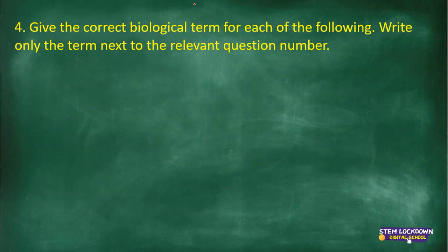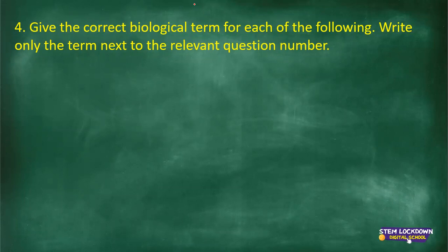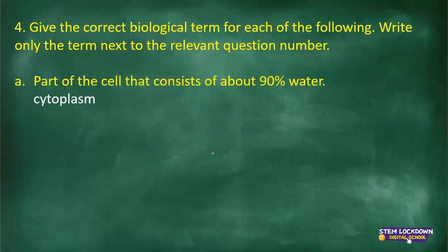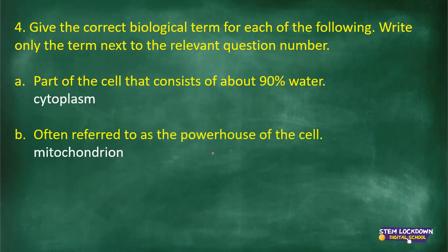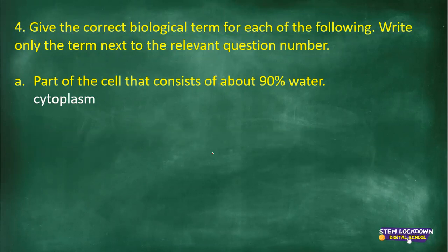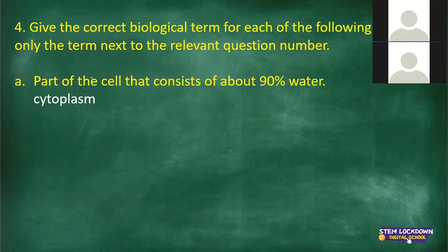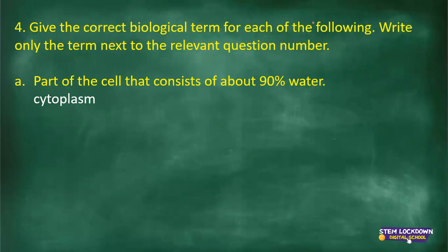Now we're giving the correct biological term for each of the following — write only the term next to the relevant question number. The part of the cell that consists of about 90 percent water is called the cytoplasm. Cytoplasm is that part of the cell that consists of about 90 percent water.